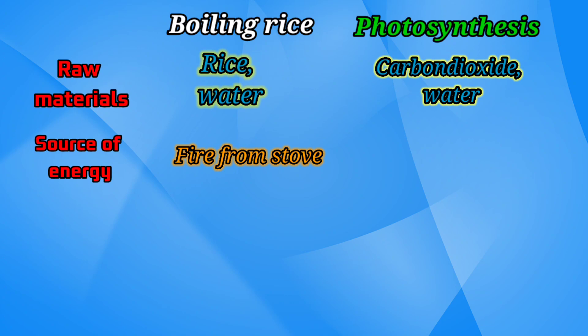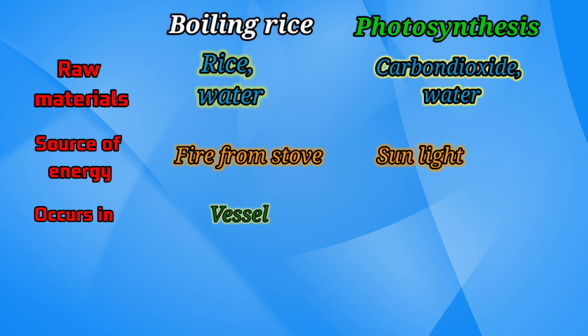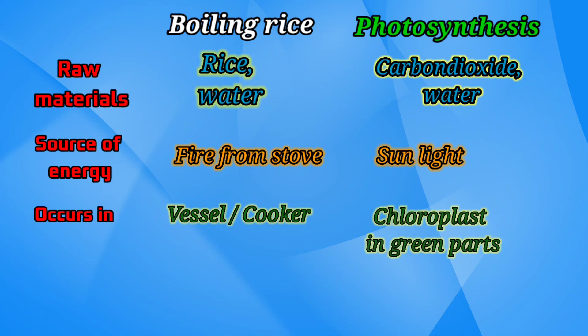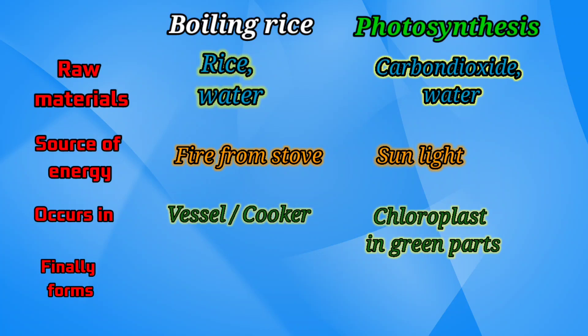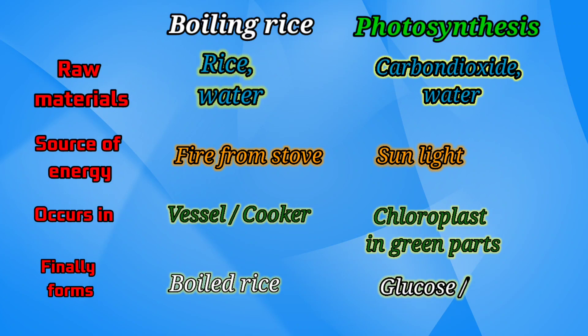in photosynthesis, it is sunlight. Boiling rice occurs in a vessel or cooker; photosynthesis in plants occurs in chloroplasts in the green parts. Finally, by boiling rice we get boiled rice; in photosynthesis, plants form glucose or carbohydrates.